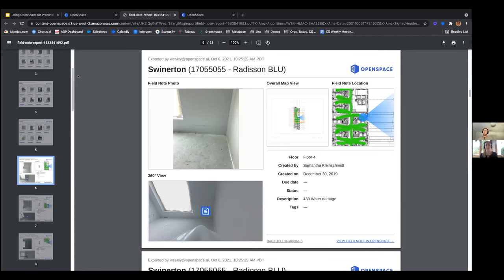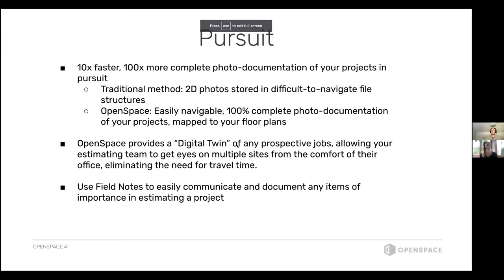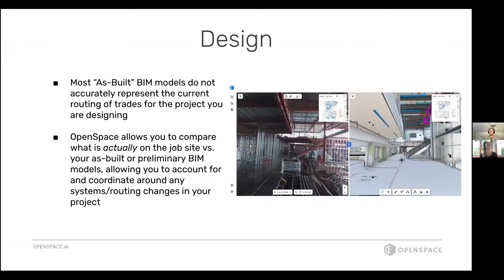Moving on to design — in preliminary design on existing facilities that already have trades installed, the as-built drawings or as-built BIM model you're given often doesn't accurately reflect current routing of all trades and systems. There will typically be cable trays, fire lines, and duct running all over the place that aren't shown in the model. Open Space lets you compare what's actually on the job site versus your as-built or preliminary BIM models.